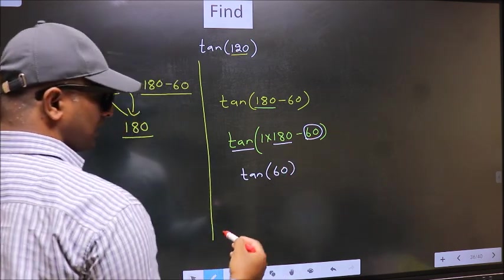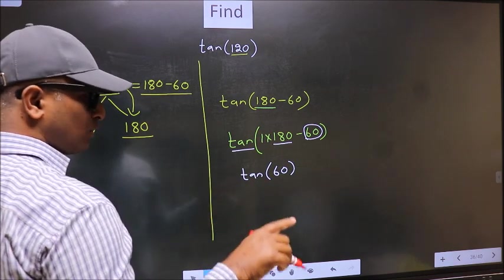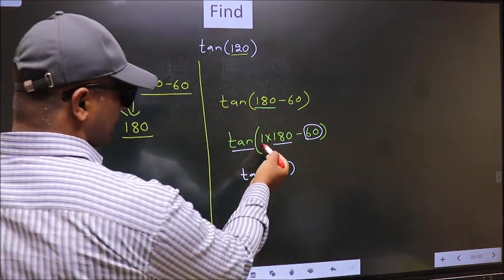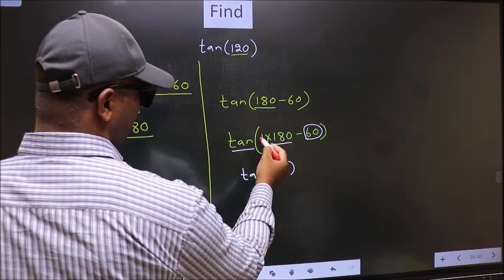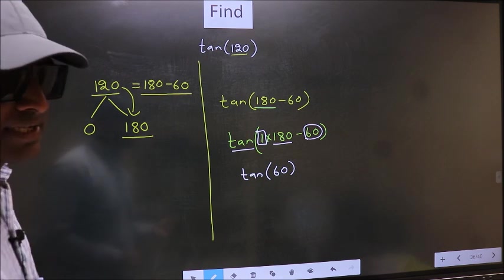Now the question is, will we get here plus or minus? To answer that, we should look at the number before 180. That is 1. And 1 is odd.